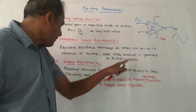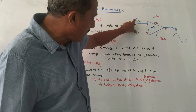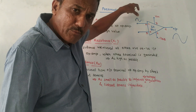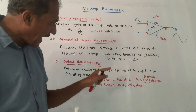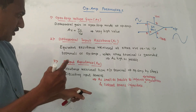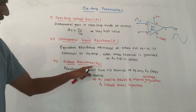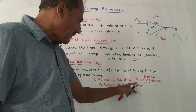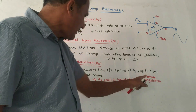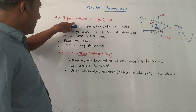The third parameter is output resistance. It is the resistance measured from the output terminal of the op-amp by short-circuiting the input sources. At pin number 2 or 3, we can connect some source, and the resistance measured at the output terminal is the output resistance R0. This value should be as small as possible to improve output voltage regulation and current source capability.